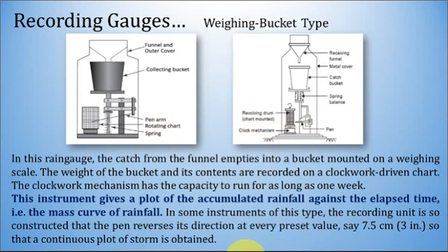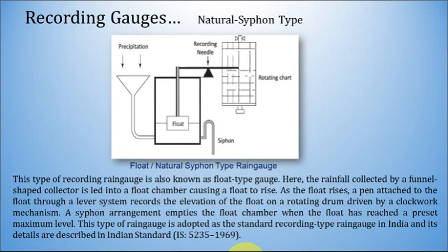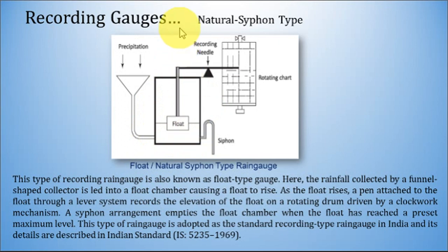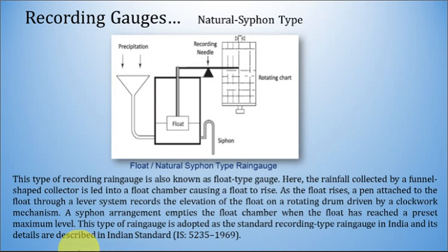This type of recording rain gauge is also known as a float type gauge. The rainfall collected by a funnel-shaped collector is led into a float chamber, causing a float to rise. As the float rises, a pen attached to the float through a lever system records the elevation of the float on a rotating drum driven by a clockwork mechanism. A siphon arrangement empties the float chamber when the float has reached a preset maximum level. This type of rain gauge is adopted as the standard recording type in India, with details described in Indian standard IS 5235-1969.